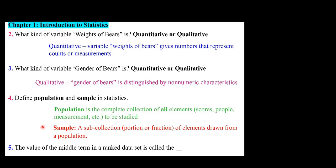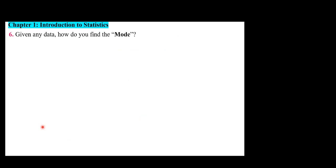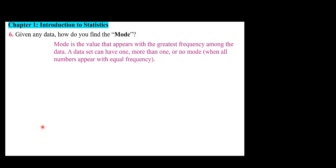The value of the middle term in ranked data is called the median. How do you find the mode? Mode is the value that appears with the greatest frequency among the data. A data set can have one mode, more than one mode, or no mode when all numbers appear with equal frequency.